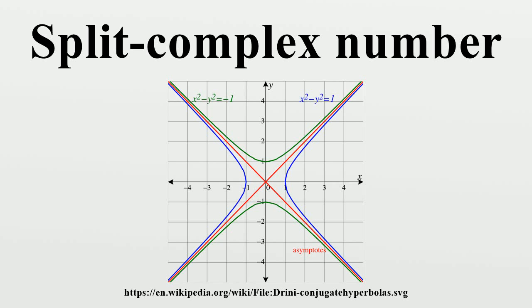Every split complex number has the form x plus yj, where x and y are real numbers. The number j is similar to the imaginary unit i, except that j² equals plus 1.